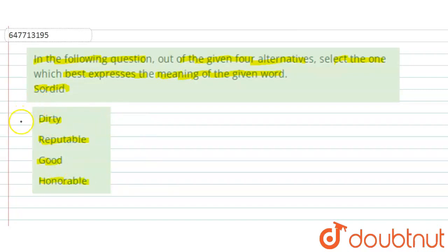So we have option A, B, C and D. Right, now we have the word sordid. Now, sordid means what is wrong or unpleasant.